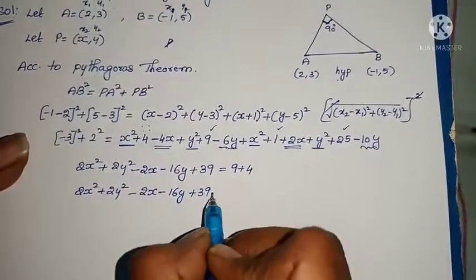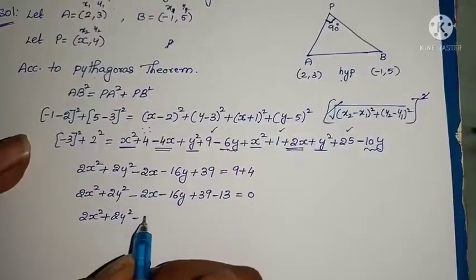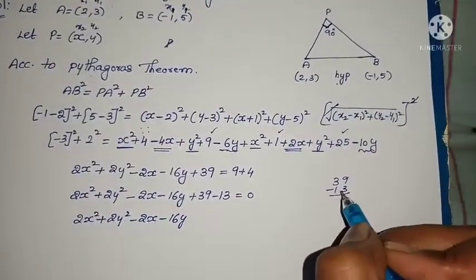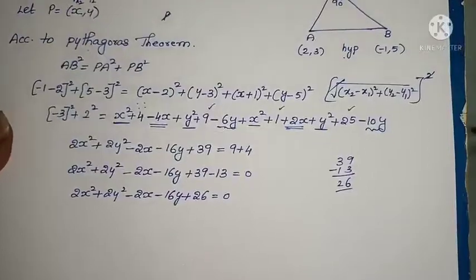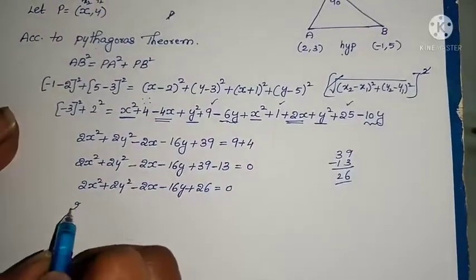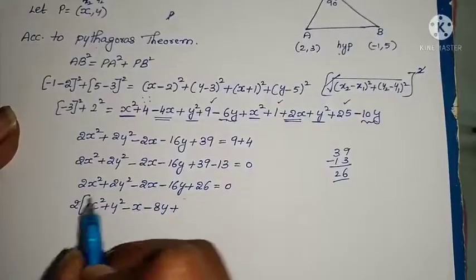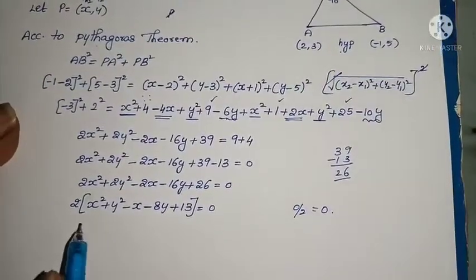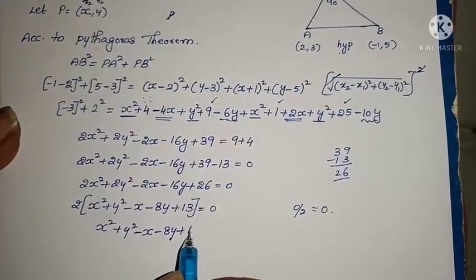The sum equals 2x² + 2y² - 2x - 16y + 39. Since 9 + 4 = 13, we get minus 13 = 0. Then 2x² + 2y² - 2x - 16y + 39 = 13. After simplification, dividing through by 2, the equation of the locus of P is x² + y² - x - 8y + 13 = 0.